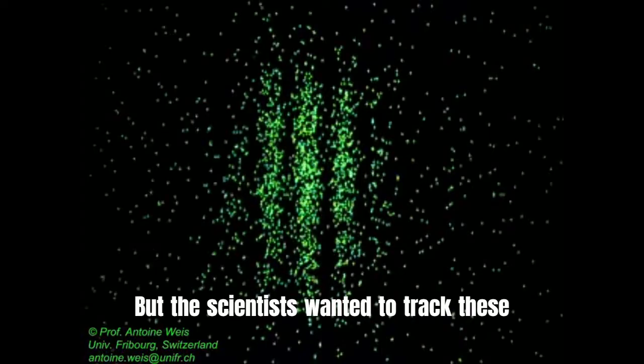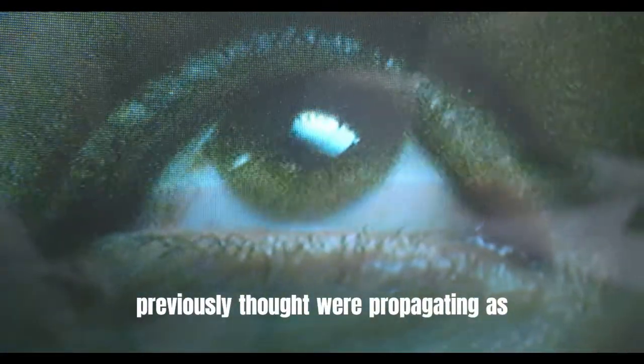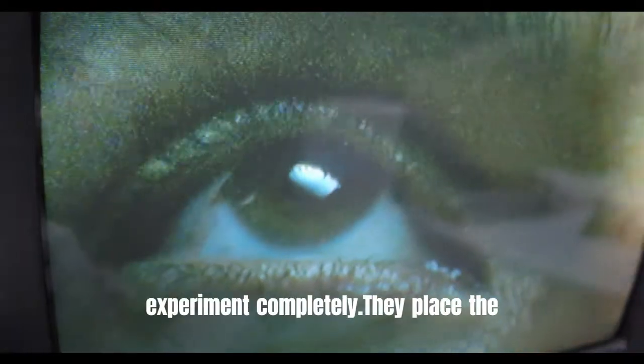But the scientists wanted to track these electrons, and they installed an electron tracker. This electron tracker would track the electrons they previously thought were propagating as waves, and allow them to complete the experiment completely.